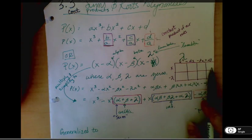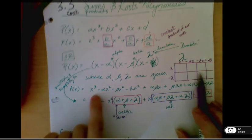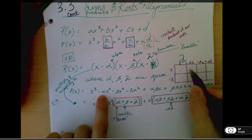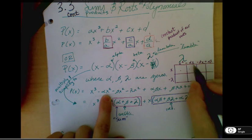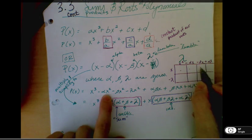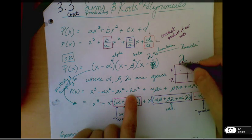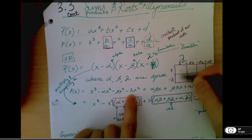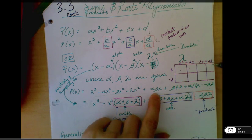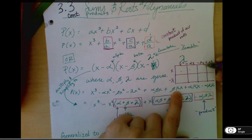So once you multiply that out, if you want to longhand, you can do it that way. You can see your X cubed, your alpha X squared, your beta X squared, and then you'll have your lambda X squared right here. And then you'll have your alpha, beta, X right here. And then you'll have your beta, lambda, X.